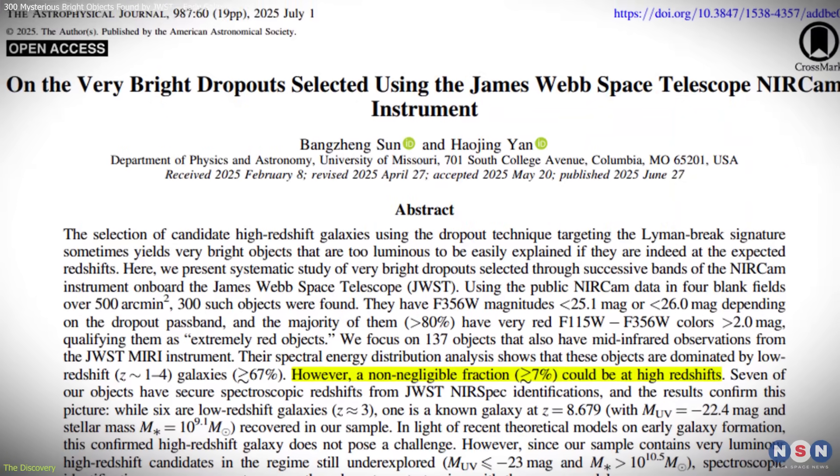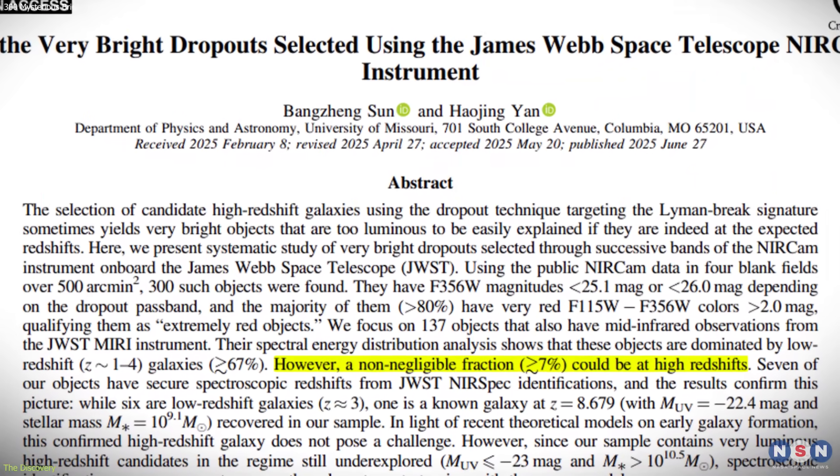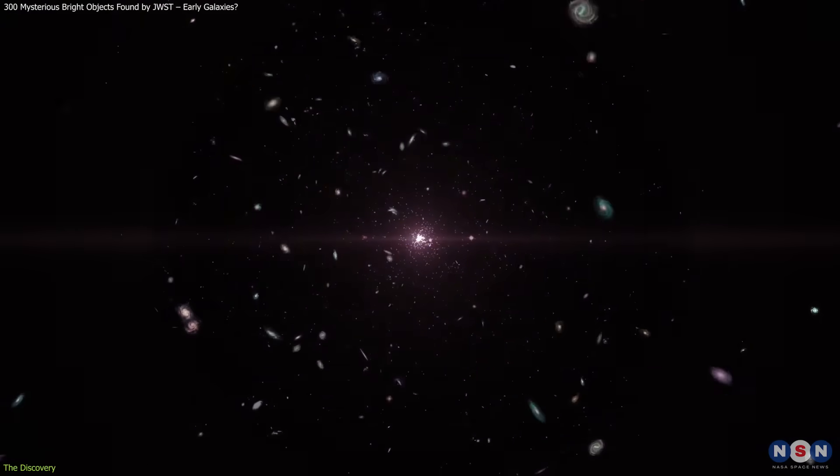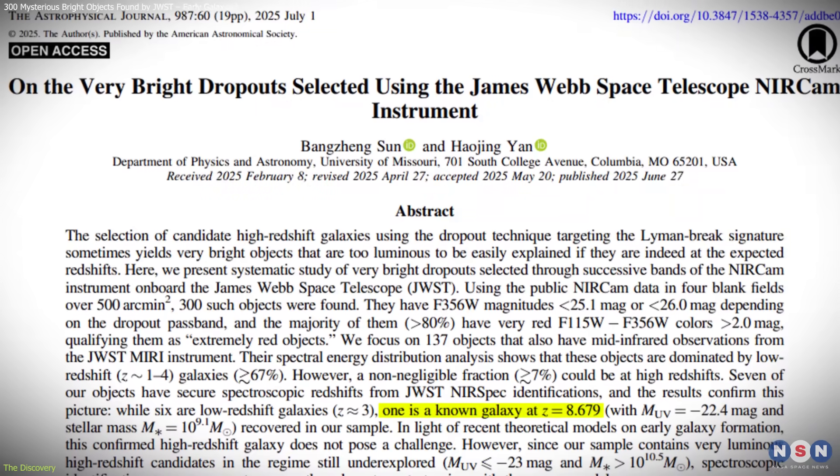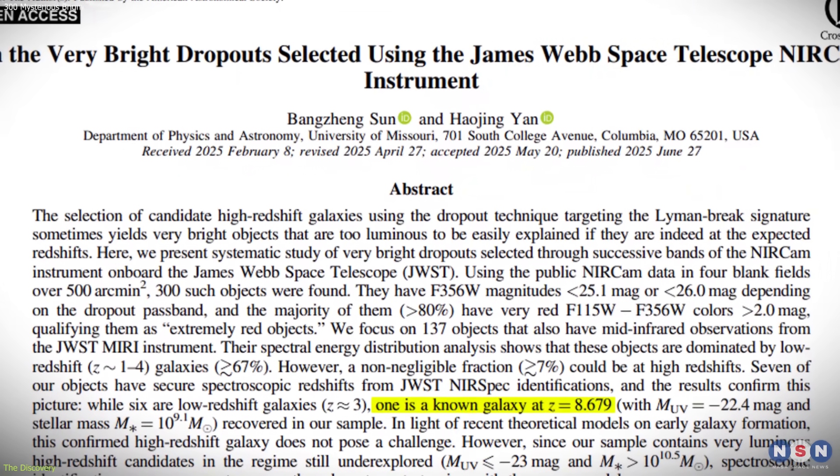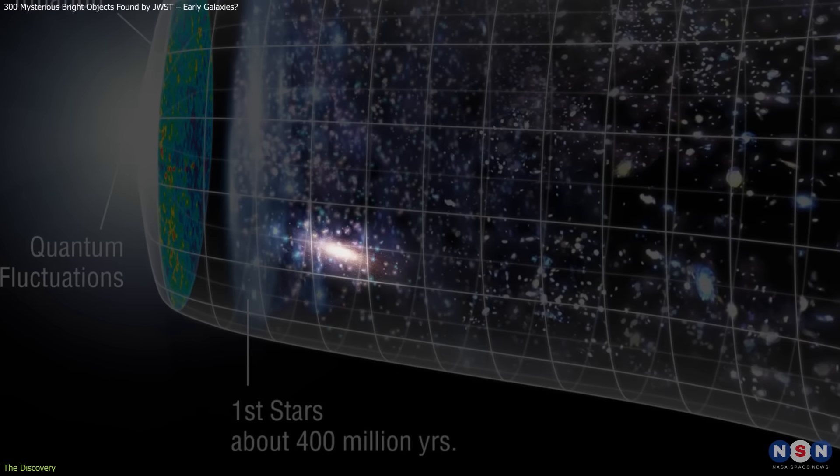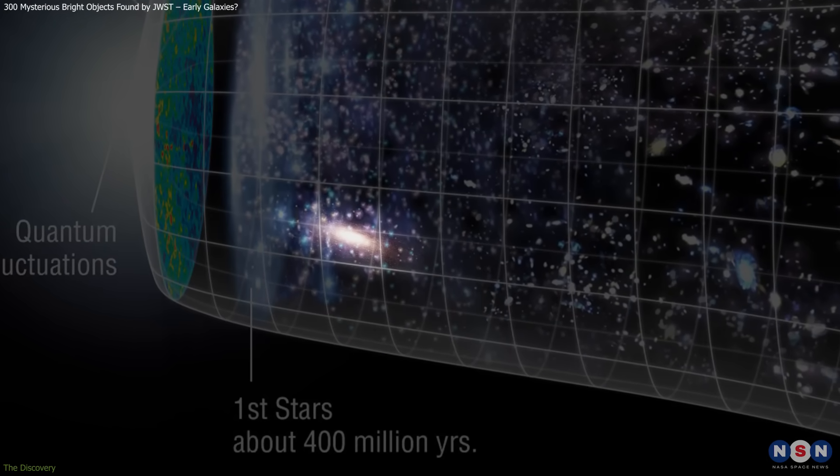However, at least 7% show signs of being much more distant, possibly dating back to the universe's first few hundred million years. One has already been confirmed at redshift 8.679 through spectroscopy, placing it roughly 570 million years after the Big Bang.